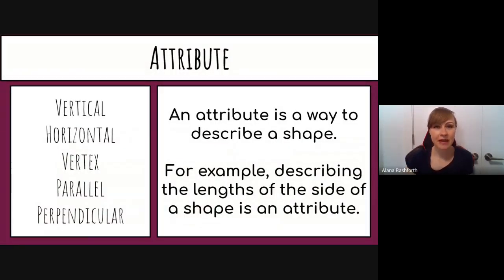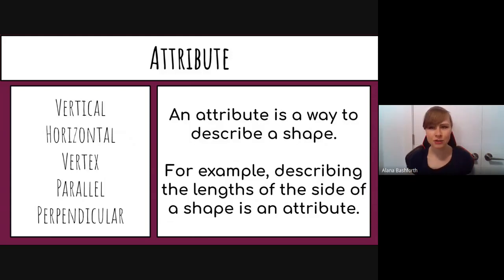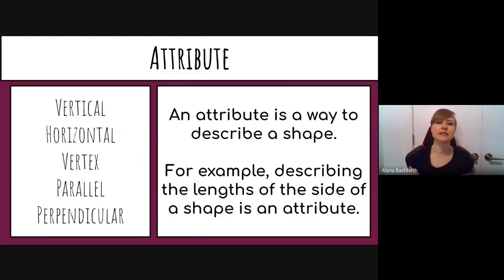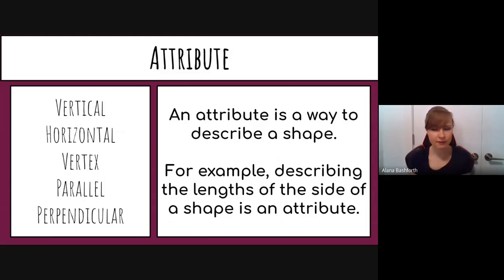An attribute describes all the other words — it is a way to describe a shape, like the qualities of a shape. An example is describing the lengths of the sides of a shape as an attribute. On the left you can see vertical, horizontal, vertex, parallel, and perpendicular, which are some other ways we describe shapes.